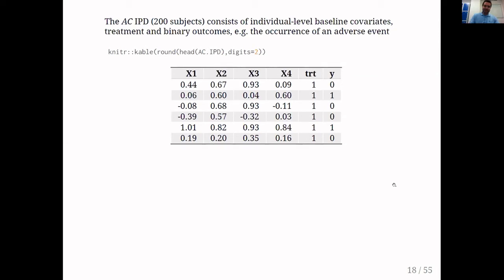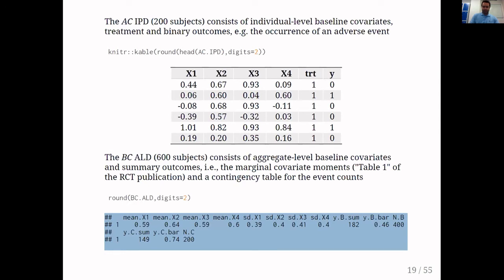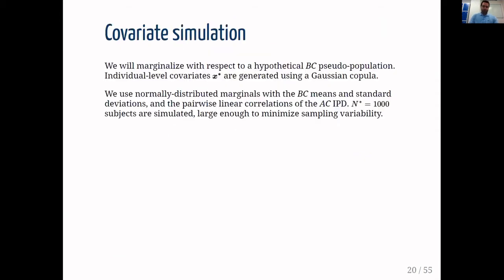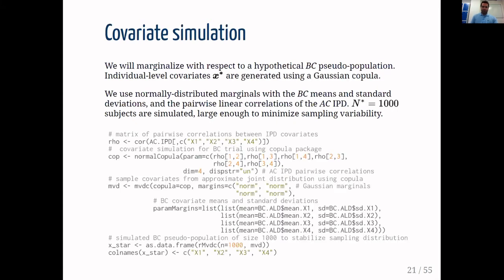The AC IPD consists of 200 subjects with baseline covariates, treatments, and binary outcomes. The BC aggregate-level data covers 600 subjects and consists of aggregate-level covariates and summary outcomes. We first perform a covariate simulation step because we will be marginalizing with respect to the BC population but do not have patient-level data. We simulate individual-level covariates using a copula, assuming normally distributed marginal distributions with means and standard deviations from the aggregate-level data study and linear correlations from the patient-level data. We simulate a pseudo-population of 1,000 subjects to minimize sampling variability, using the copula package in R.